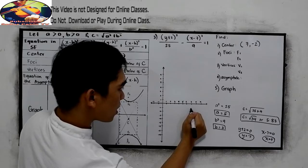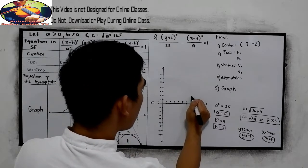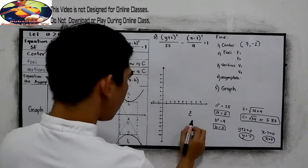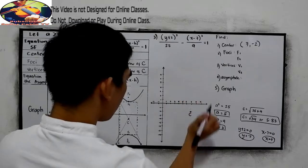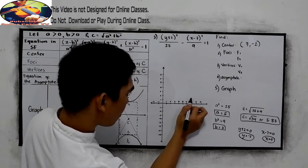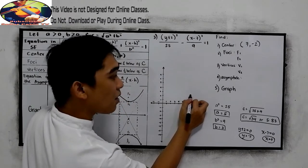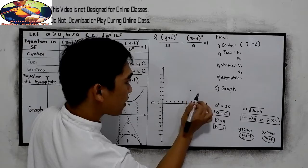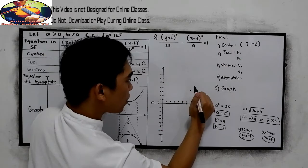So 5 units, 5.83 above. So we have in 2. So 1, 2, 3, 4, 5. Then again, 1, 2, 3, 4, 5. So 1, 2, 3, 4, 5. In decimal, we have 0.83. So near 4. So it's here. So this is our f sub 2 or f sub 1.